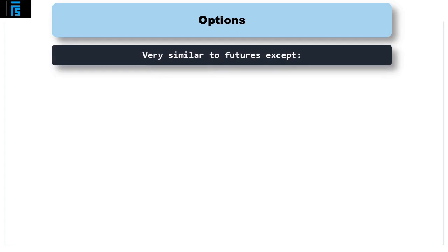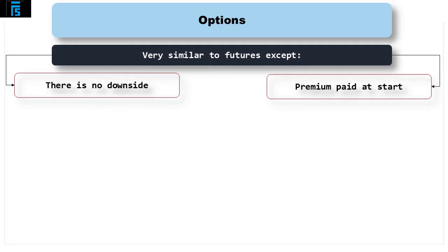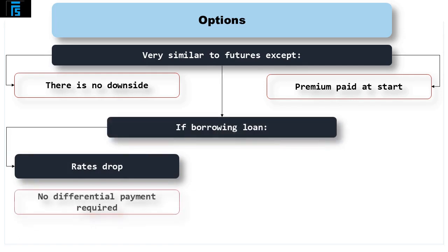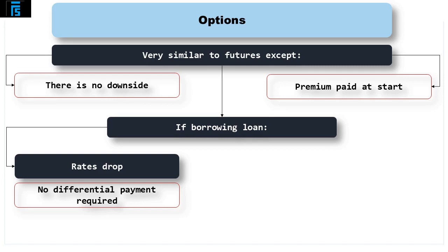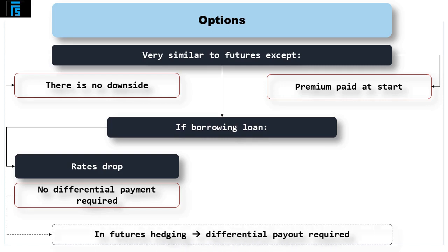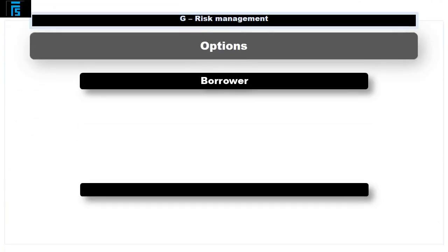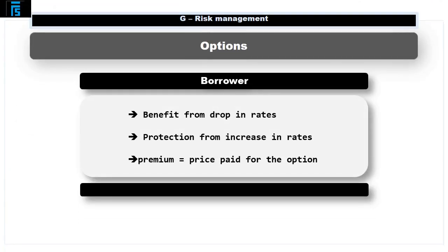Options operate very much like futures except there's no downside other than a premium paid at the start. As a result of paying the premium, if rates drop in the run-up to taking out a loan, you get to keep the low loan rate and won't have to pay out under the option. In similar circumstances, if you'd used a futures hedge, the low rate would effectively be taken away as you'd have to pay out losses under the futures arrangement. However, if rates rise, you pay out more for the loan you sign but receive compensation from the options market. This means you can benefit from a drop in rates if you're a borrower, but are protected from an increase in rates. The price you pay is a premium when the hedge is set up.